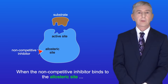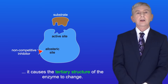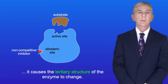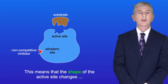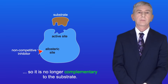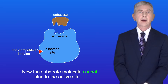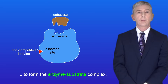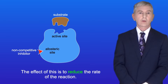When the non-competitive inhibitor binds to the allosteric site, it causes the tertiary structure of the enzyme to change. This means that the shape of the active site changes, so it's no longer complementary to the substrate. Now the substrate molecule cannot bind to the active site to form the enzyme-substrate complex, and the effect of this is to reduce the rate of the reaction.